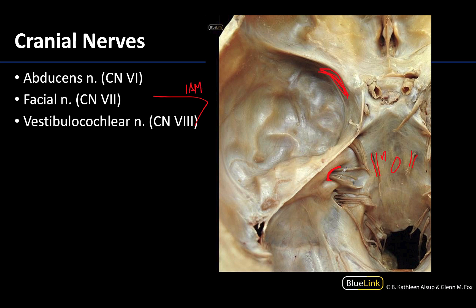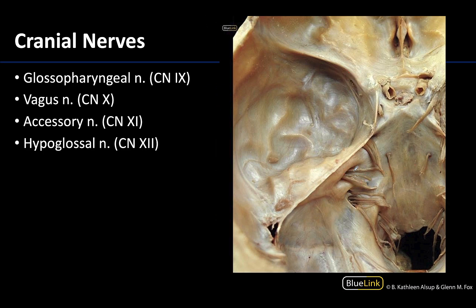The vestibulocochlear tends to be the larger of the two, whereas the facial is the smaller. The glossopharyngeal, vagus, and accessory nerves exit the skull via the jugular foramen, which is in this general region. The dura has created a little compartment within the jugular foramen, which is not uncommon. Similar to the internal acoustic meatus, it's really difficult to differentiate the glossopharyngeal and vagus here — this would be cranial nerve 9 and this would be 10.